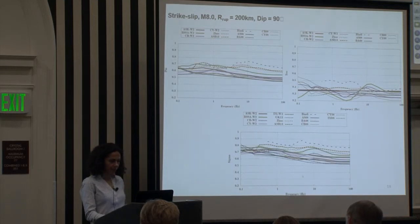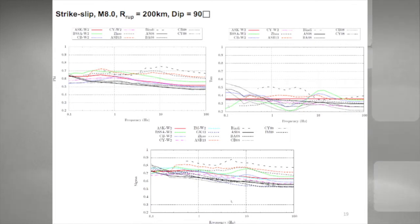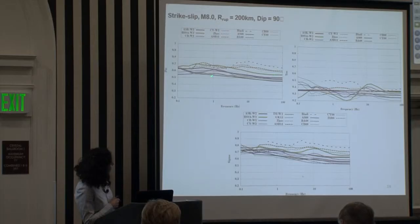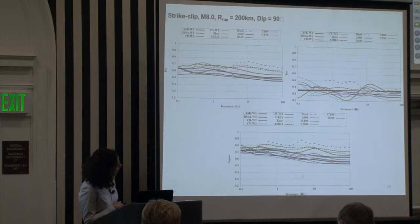And this is the total standard deviation combining the two. Strike slip magnitude 8, distance 200 kilometers. We have here, again, Bindi, Zhao, and Akkar et al. high. Now BSSA is coming up high, and I think this is because of the long period, the large distance. And you have tau here and the total standard deviation at the bottom.